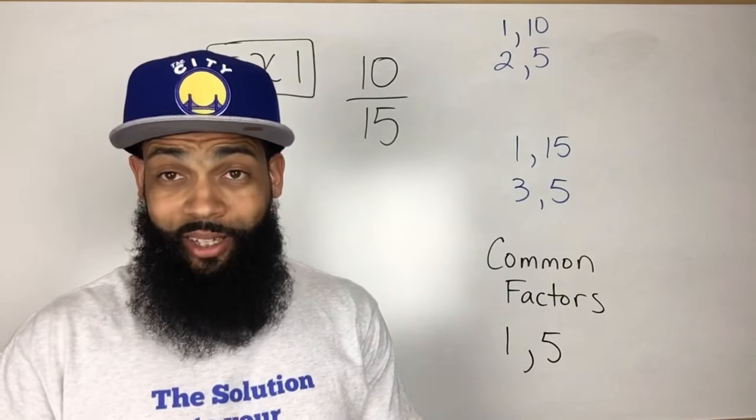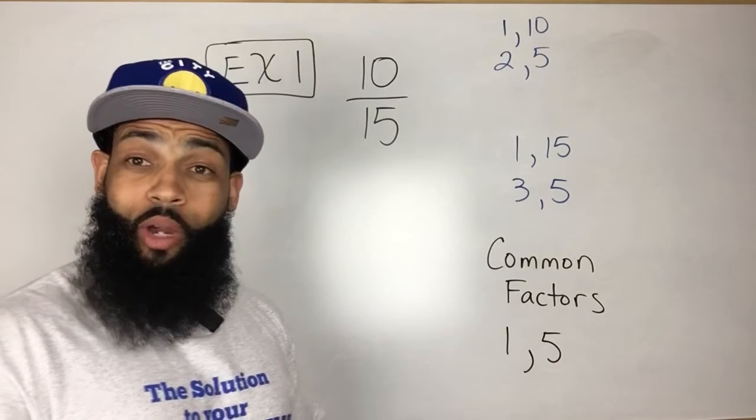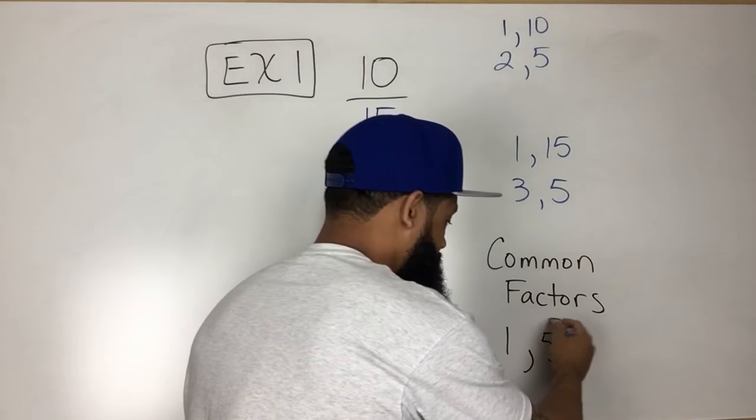Well the greatest common factor is the largest number out of these two. So the greatest common factor would be 5.